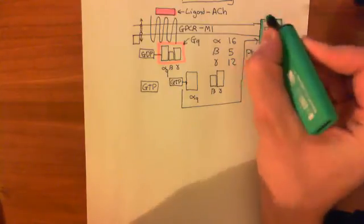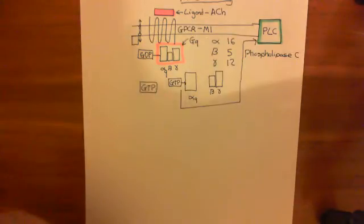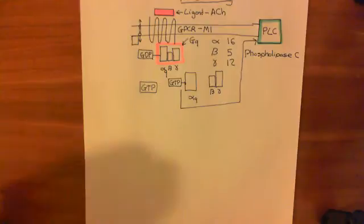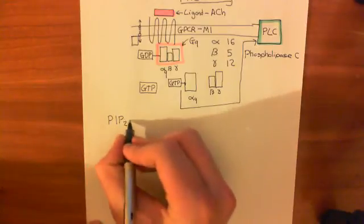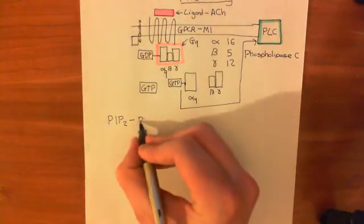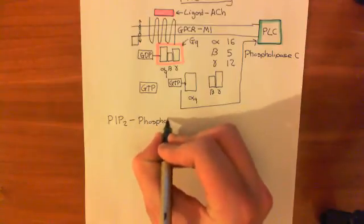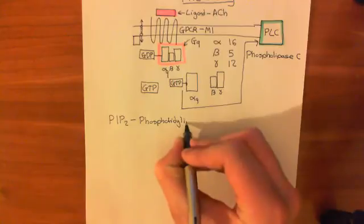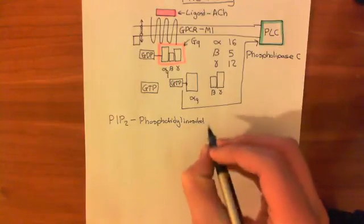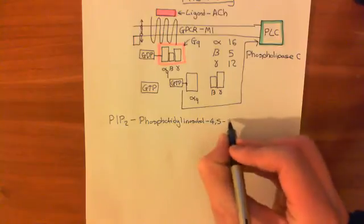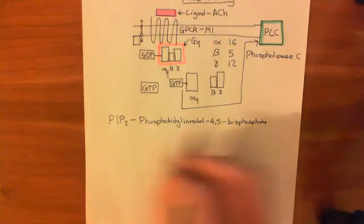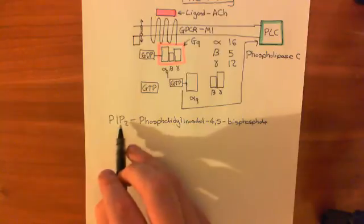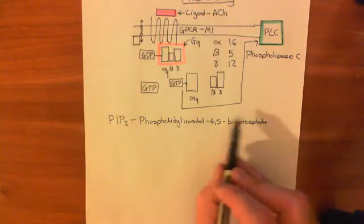PIP2 is a large molecule found in the phospholipid bilayer — it has a structure fairly similar to a phospholipid. PIP2 stands for phosphatidyl inositol 4,5-bisphosphate: the P stands for phosphatidyl, the I stands for inositol, and P2 stands for bisphosphate.